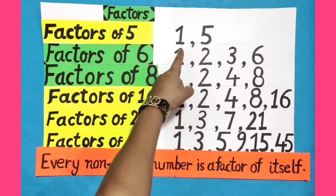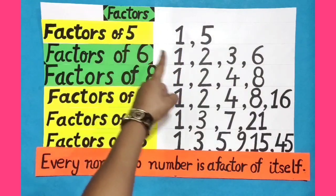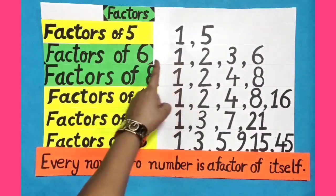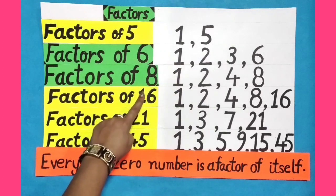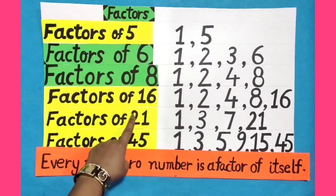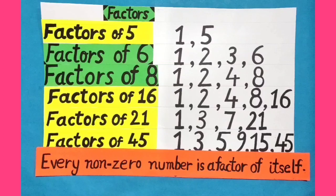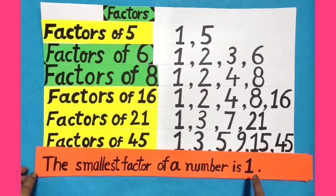Dear students, 1 is the smallest factor of 5. Similarly, 1 is the smallest factor of 6, 8, 16, 21 and 45. That means the smallest factor of a number is 1.